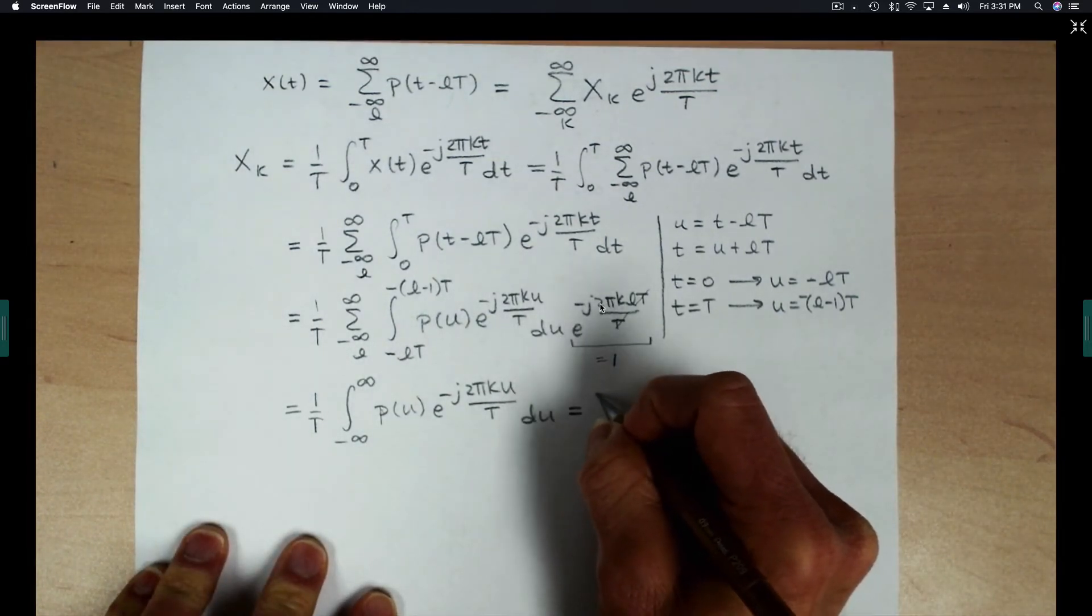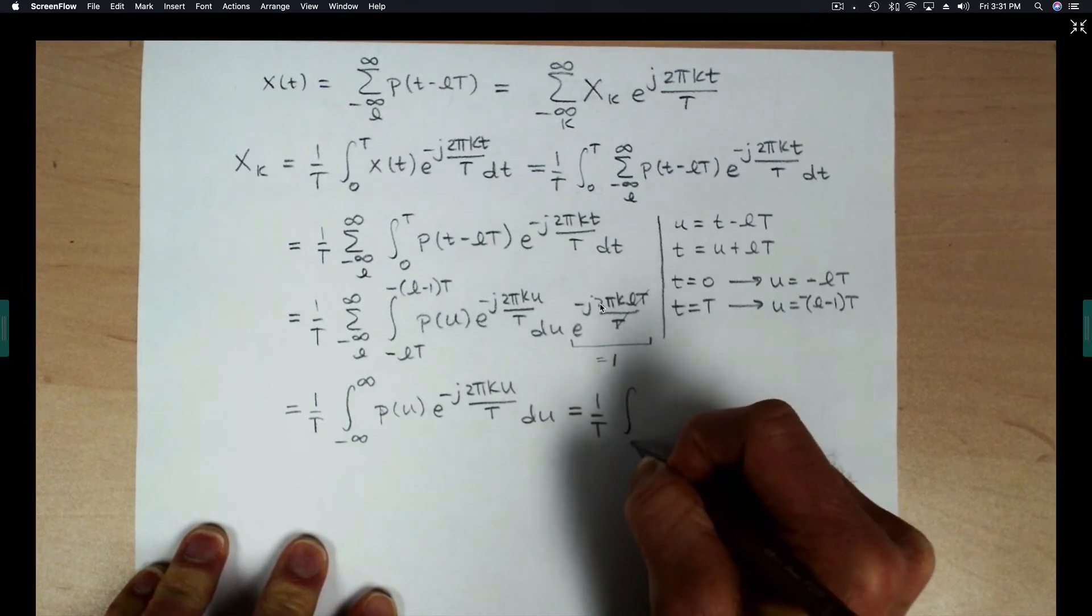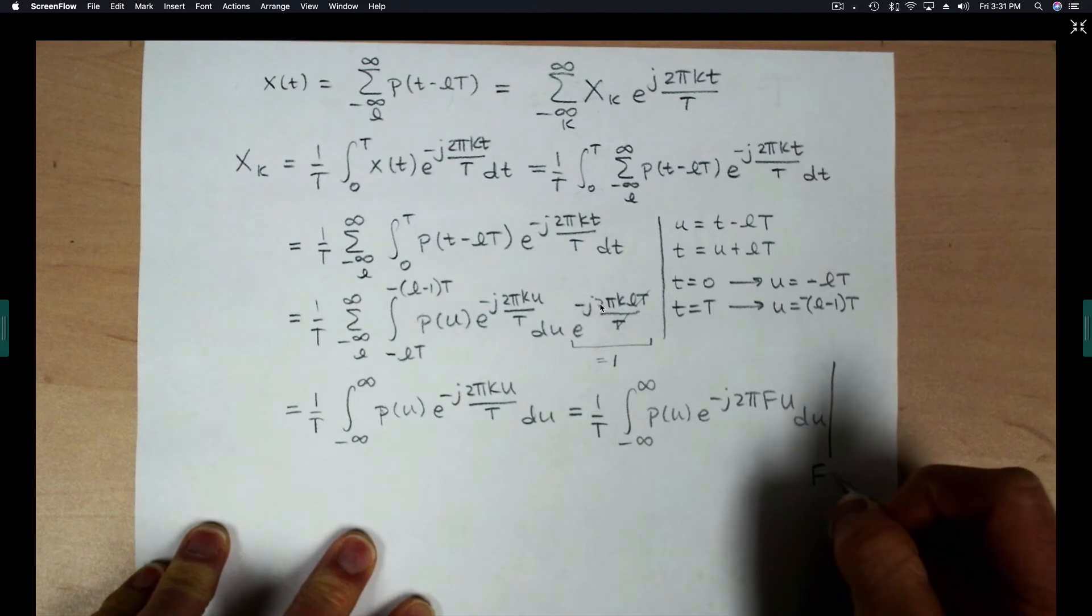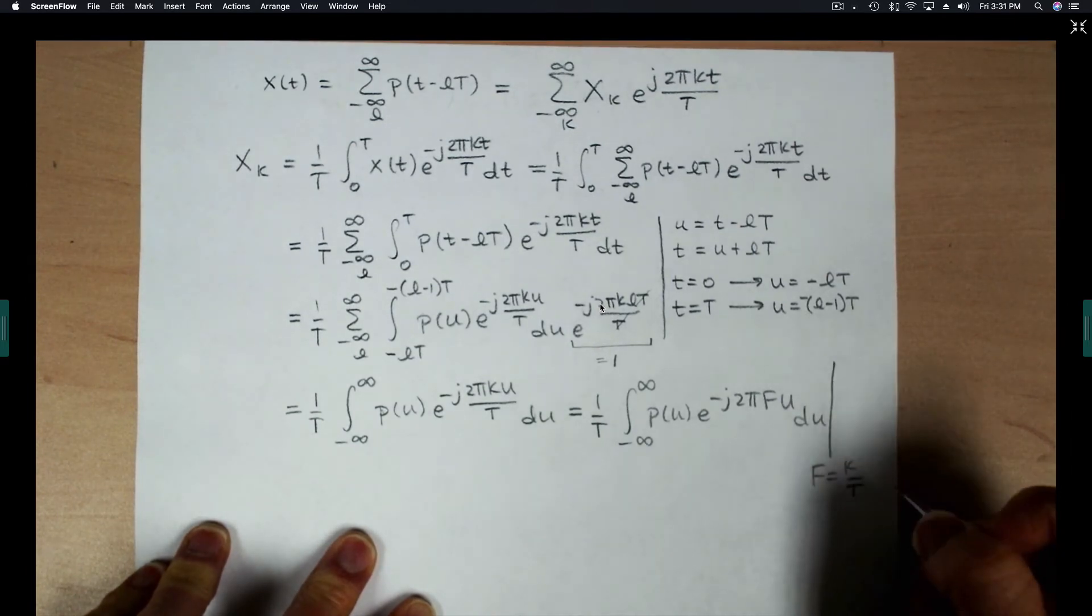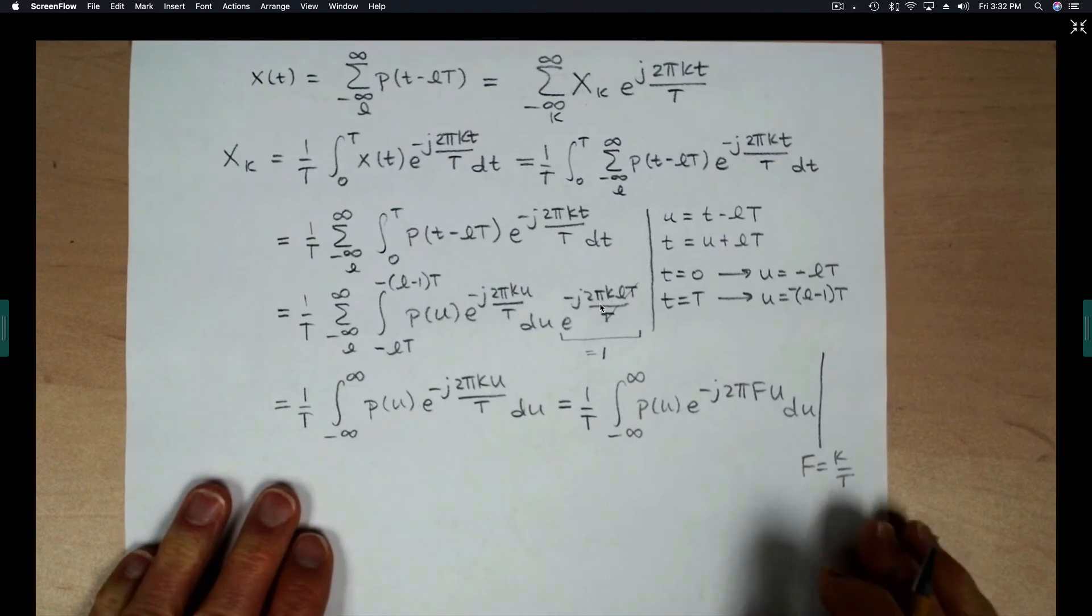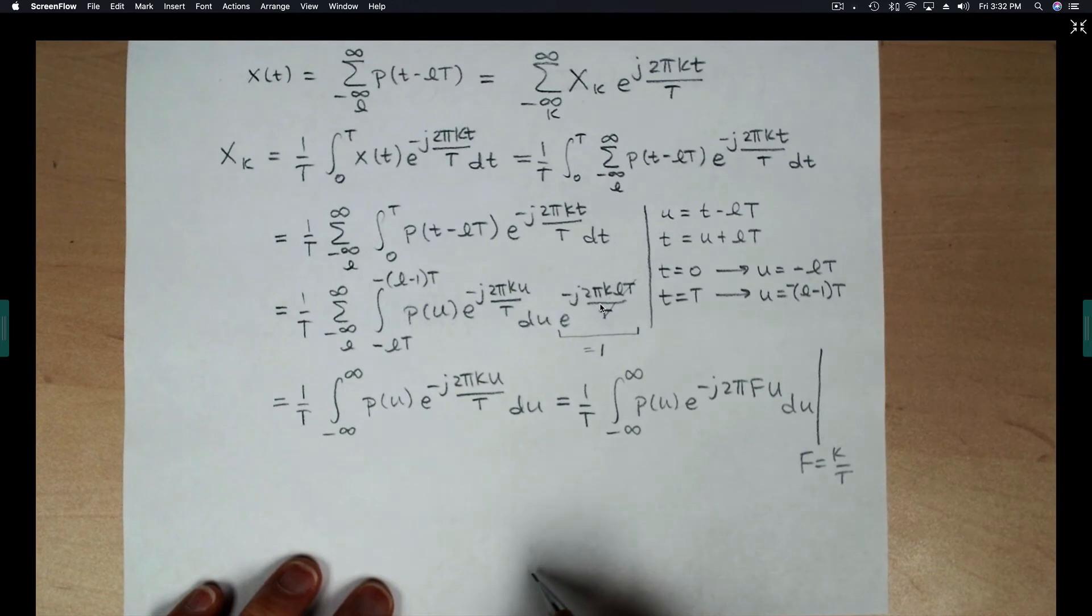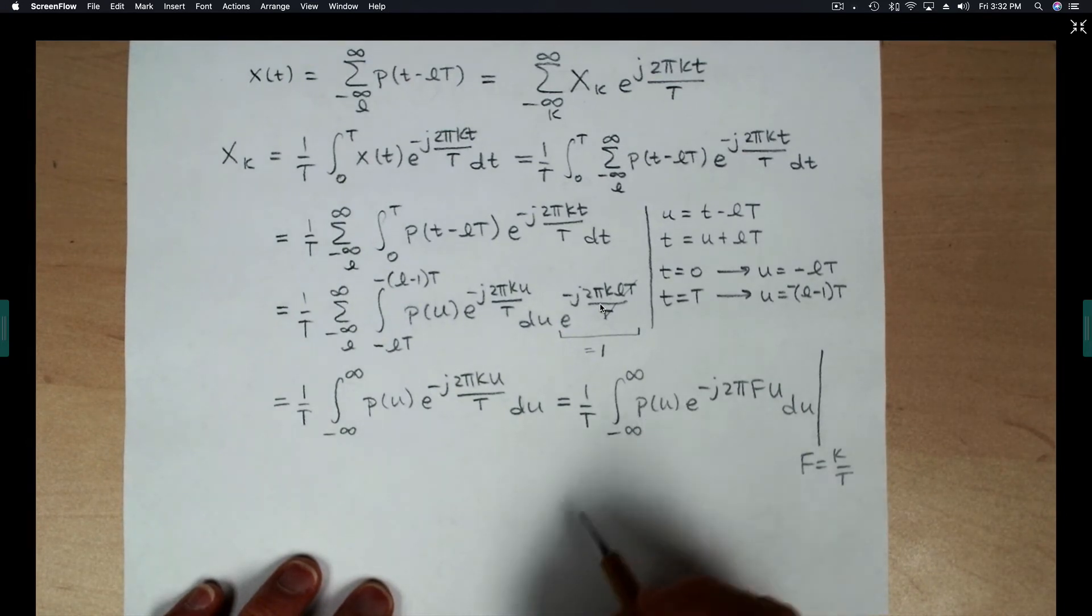And then the next thing that I want to do is another substitution, where I've made the substitution F instead of K over T. And the reason that I've done that is simply to help us recognize that what's left is the Fourier transform of this function P of U.